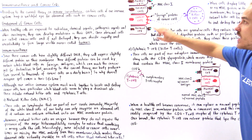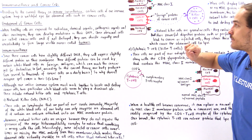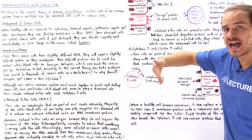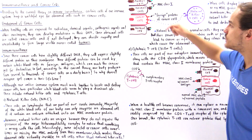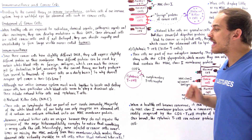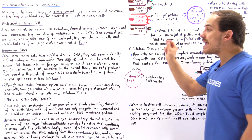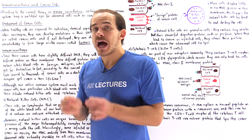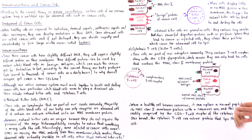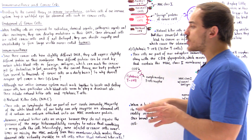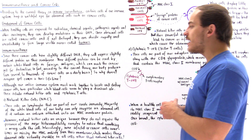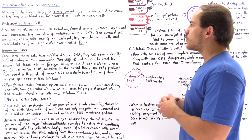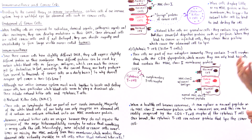This is important because sometimes cancer cells or infected cells lose the ability to create the MHC class 1 or MHC class 2 complex, meaning they no longer contain these complexes on their membrane. That makes them virtually invisible to all white blood cells that require MHC class 1 or class 2 to detect those cells. Natural killer cells can bind and destroy these cancer cells regardless of whether or not they have the MHC complex on the membrane.